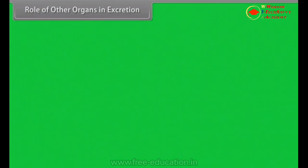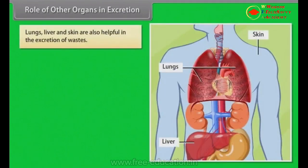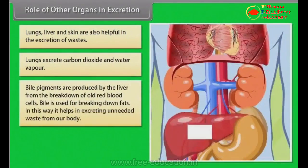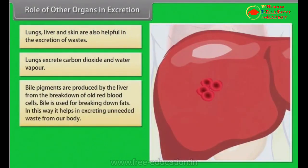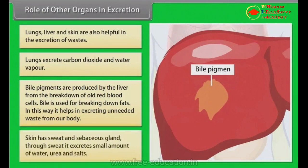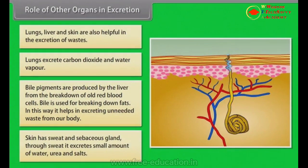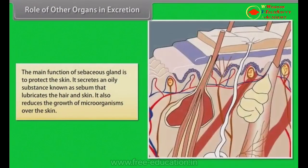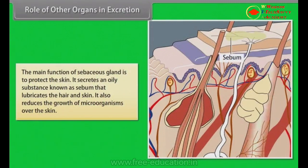Role of other organs in excretion. Lungs, liver, and skin are also helpful in the excretion of wastes. Lungs excrete carbon dioxide and water vapour. Bile pigments are produced by the liver from the breakdown of old red blood cells; bile is used for breaking down fats, helping to excrete unneeded waste. Skin has sweat glands and sebaceous glands. Through sweat, it excretes small amounts of water, urea, and salts. The main function of sebaceous glands is to protect the skin by secreting an oily substance called sebum, which lubricates hair and skin and reduces the growth of microorganisms on the skin.